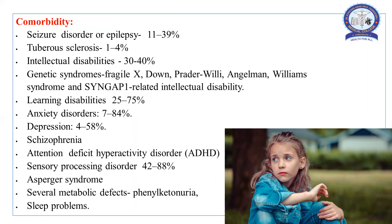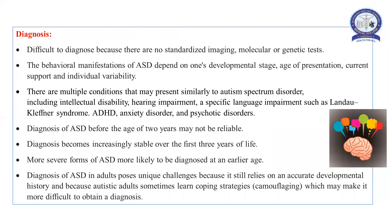Along with autism, some other conditions are also associated, known as comorbid conditions. In autistic children: 11 to 40% have a seizure disorder, convulsions, or epilepsy; 1 to 4% have tuberous sclerosis; 30 to 40% have intellectual disabilities; and genetic syndromes like Phelan-McDermid syndrome, Down syndrome, Prader-Willi, and Williams syndrome are associated with autism. 25 to 75% have a learning disability; many have anxiety; some are associated with depression or schizophrenia; and there is also attention deficit hyperactivity disorder. About 40 to 80% have sensory processing disorders, and some have severe metabolic defects like phenylketonuria.